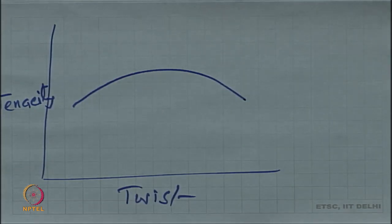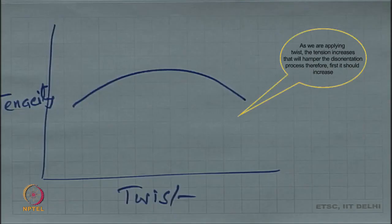Before we say it is right or wrong, why should tenacity increase? One view: it should not increase because orientation will change and disorientation will take place. Another argument: we are applying twist so there will be high tension that will hamper the disorientation, and therefore first it will increase. One argument is that because there is tension it would help to increase orientation and therefore tenacity may increase.